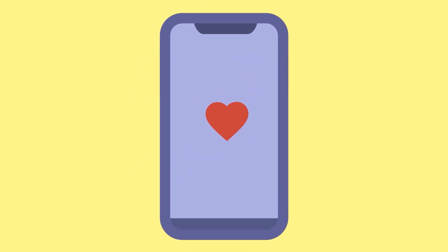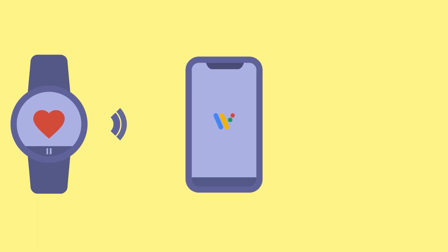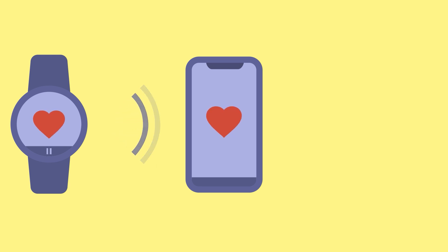Then do the same with your smartphone. Go to the Play Store and download the app. To receive the heart rate of your watch, make sure to connect it to your smartphone using the Wear OS app.